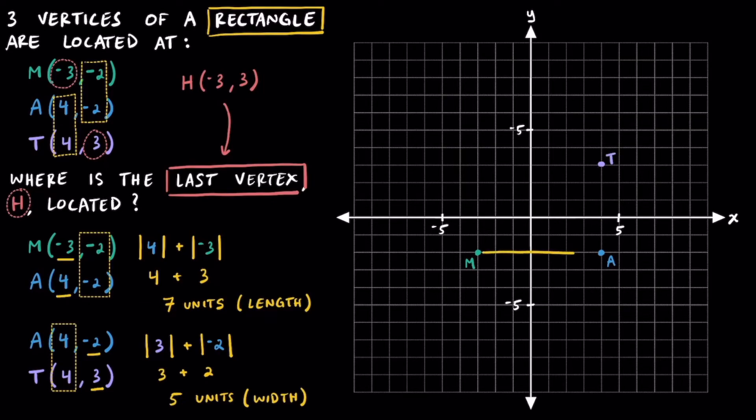Connecting point M to A and A to T, we can see that we have two sides of a rectangle. Now, trying to imagine the other two sides of the rectangle, we're going to have an equal width going up the left side and an equal length going across the top. Imagining where these two additional lines meet, we have vertex H or point H located in quadrant 2.